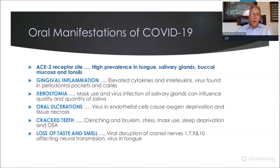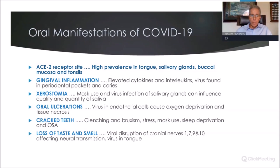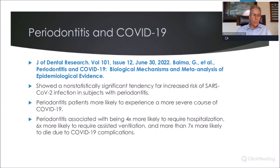Obviously we know the loss of taste and smell: multiple cranial nerves are impacted and infected with the virus, affecting neural transmission. The virus is also found in the tongue and in the minor salivary glands that inhabit the tongue and cheeks. Fortunately, for most people that goes away, but if there is neural damage it may be long-lasting.